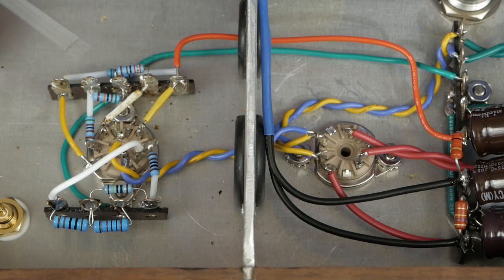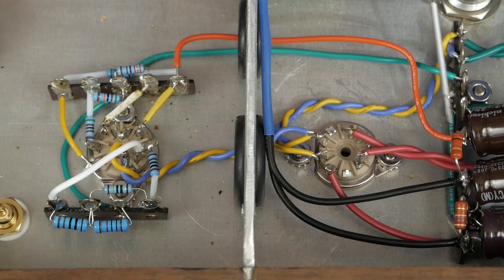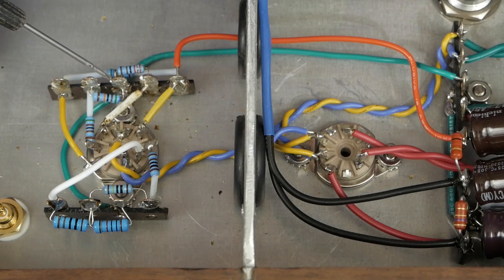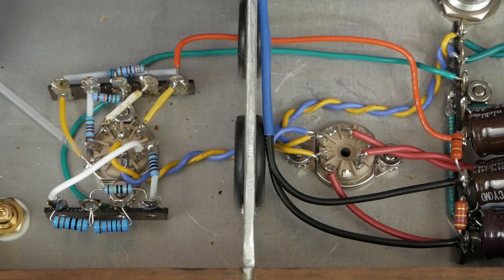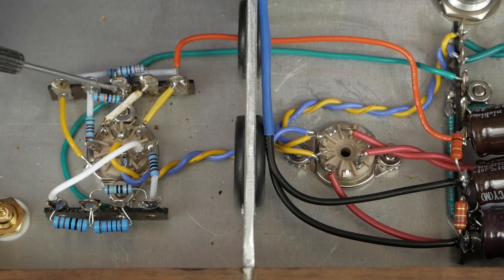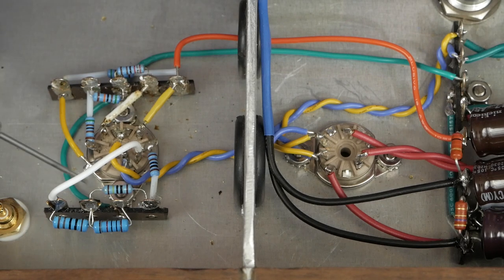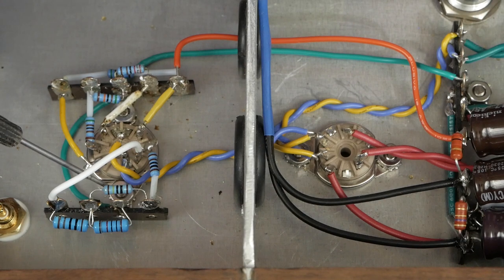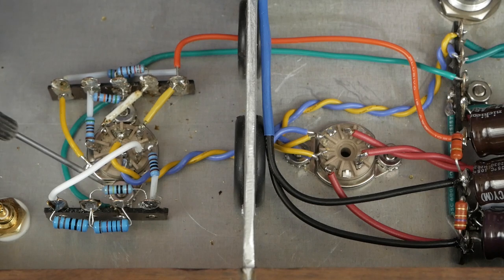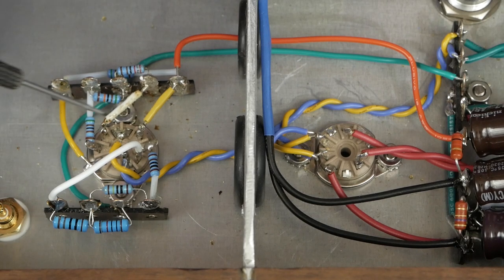So I also went ahead and ran this power lead from this plate tie point here where both the plates are connected. This one's directly, this one's through this plate load resistor. And this comes over to our B plus and our power supply. And then we have the ground comes over here to this ground point.